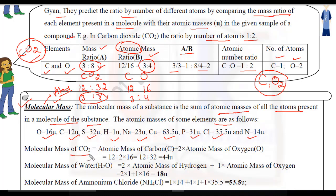Now let's look at some examples. Molecular mass of carbon dioxide CO2: atomic mass of carbon = 12, plus 2 × atomic mass of oxygen = 2 × 16 = 32. Total molecular mass of CO2 = 12 + 32 = 44 U.